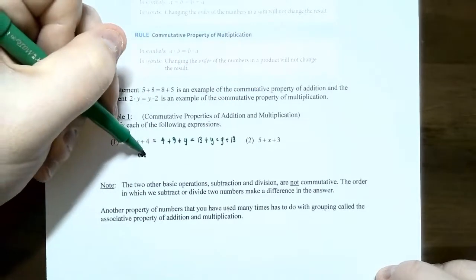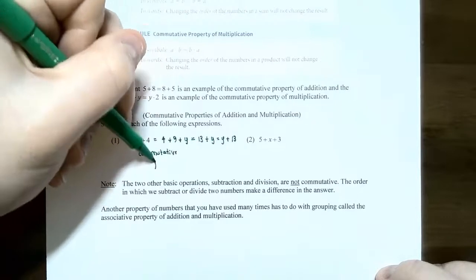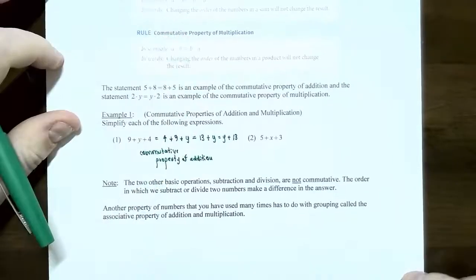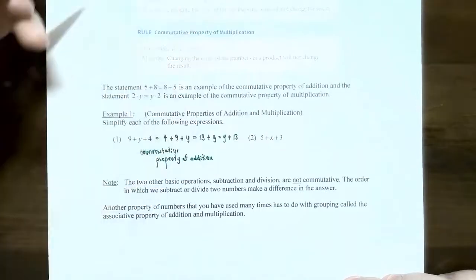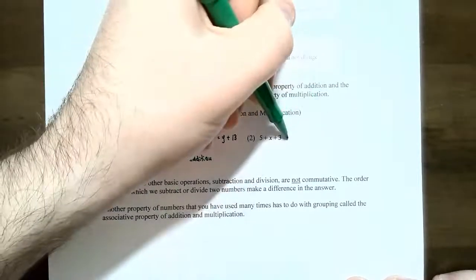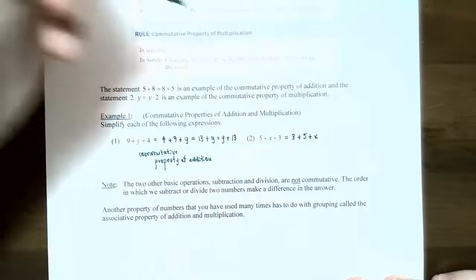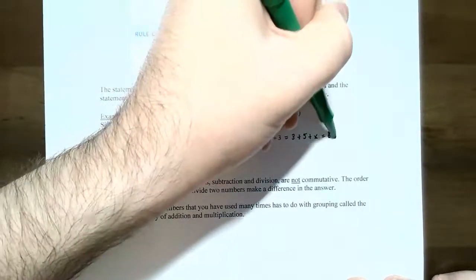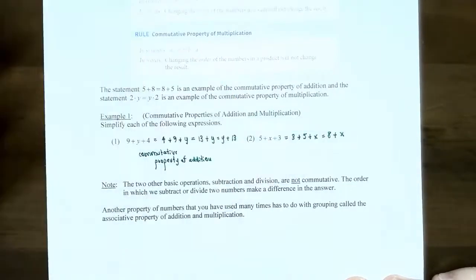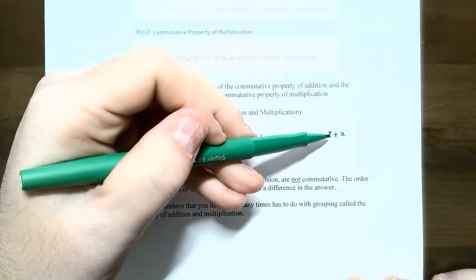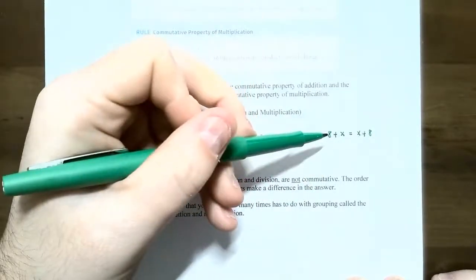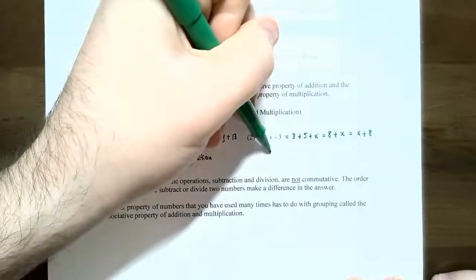This is called the commutative property of addition. Number 2: 5 plus x plus 3. We can rearrange the addition in any order because the sum will always be the same. So we can have 3 plus 5 plus x, and 3 plus 5 gives us 8 plus x. Since 8 and x are not like terms — one's a number and the other's a variable — keep them separate. You can also rearrange it to x plus 8 using the commutative property of addition.